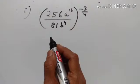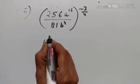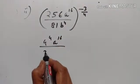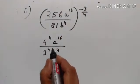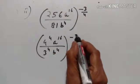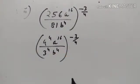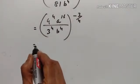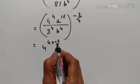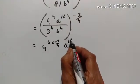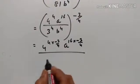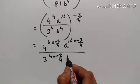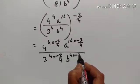256 is equal to 4 raised to the power of 4. a raised to the power of 16 upon 81 is equal to 3 raised to the power of 4. b raised to the power of 4. Then 4 raised to the power of 4 into minus 3 upon 4, a raised to the power of 16 into minus 3 upon 4, upon 3 raised to the power of 4 into minus 3 upon 4, b raised to the power of 4 into minus 3 upon 4.